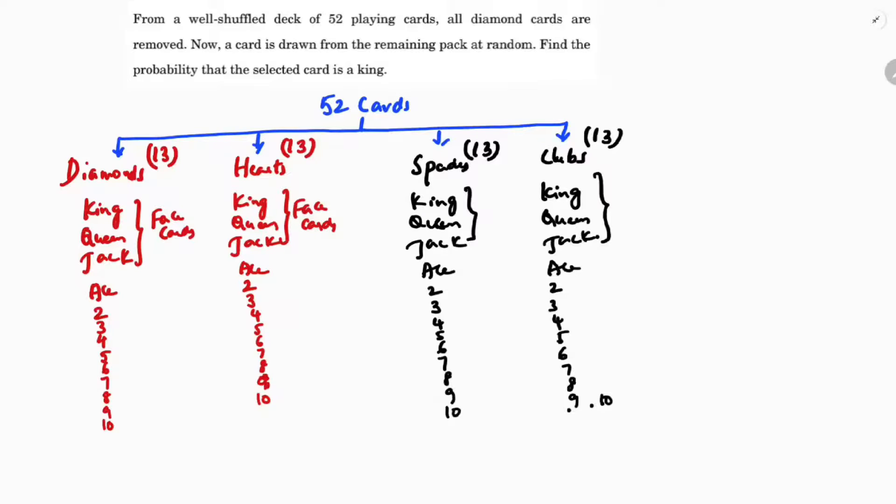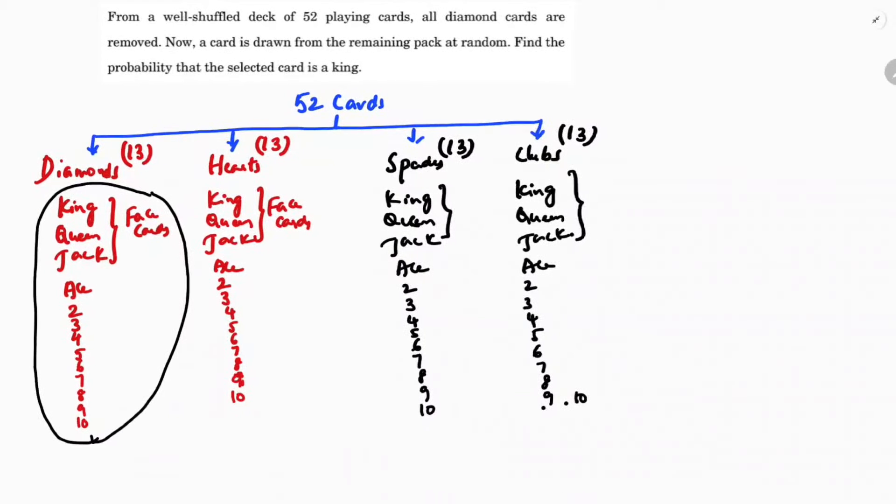Now in the question it is given very clearly that all the diamond cards are removed, so all these cards are removed. So now we have only 39 cards.